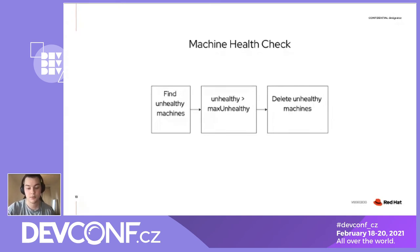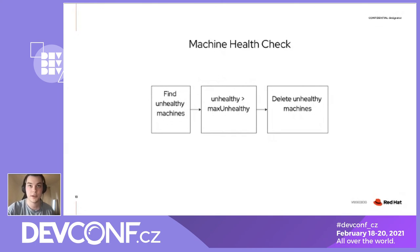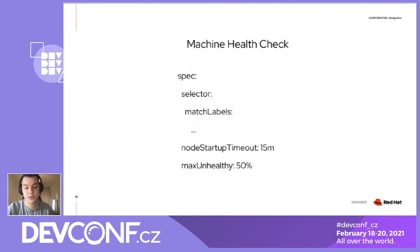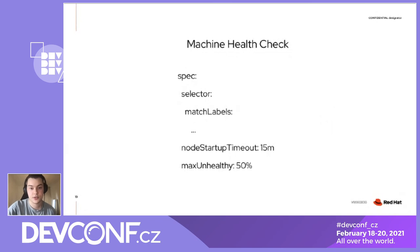You might ask: how do we understand that machines are not healthy? We do this by looking at the nodes associated with them. Usually if a node is unhealthy, it's reflected in the node status. Machine health checks are another Kubernetes resource, and in its spec you should specify a selector for selecting machine sets, a node startup timeout, and max unhealthy for the allowed number of unhealthy machines.